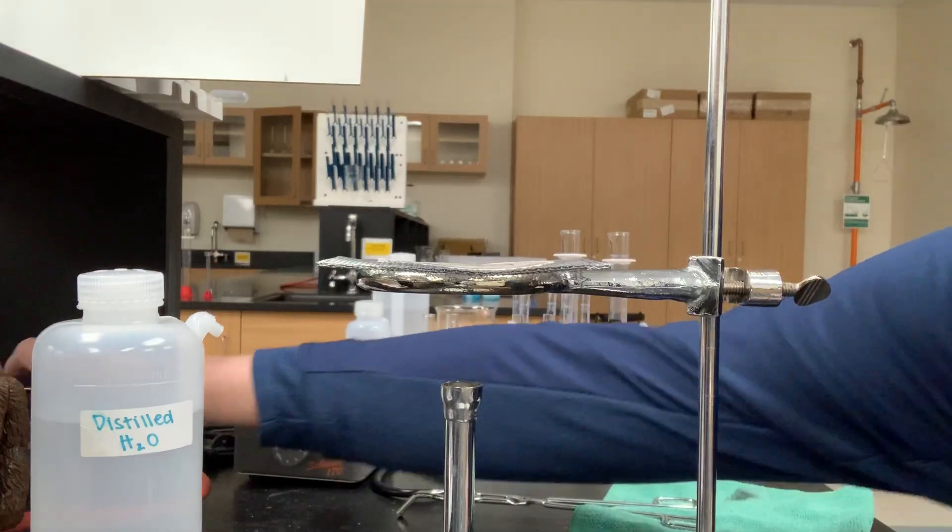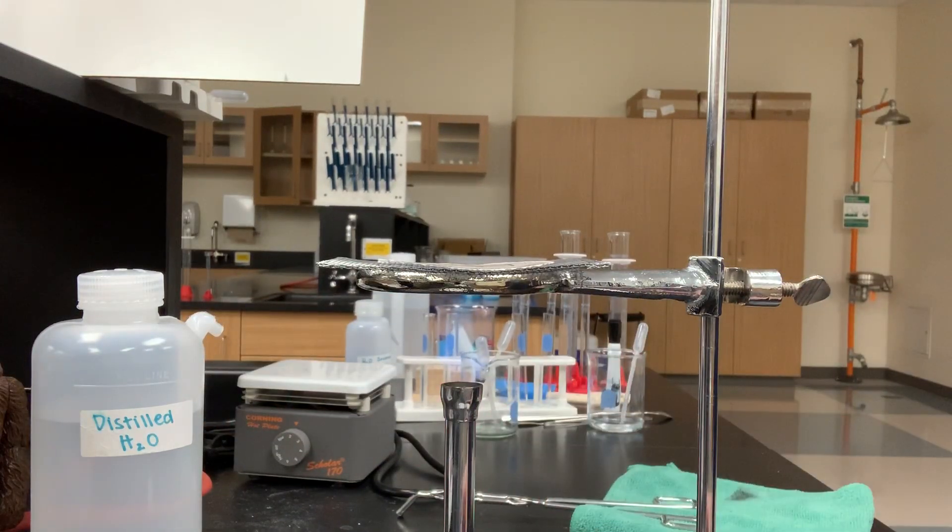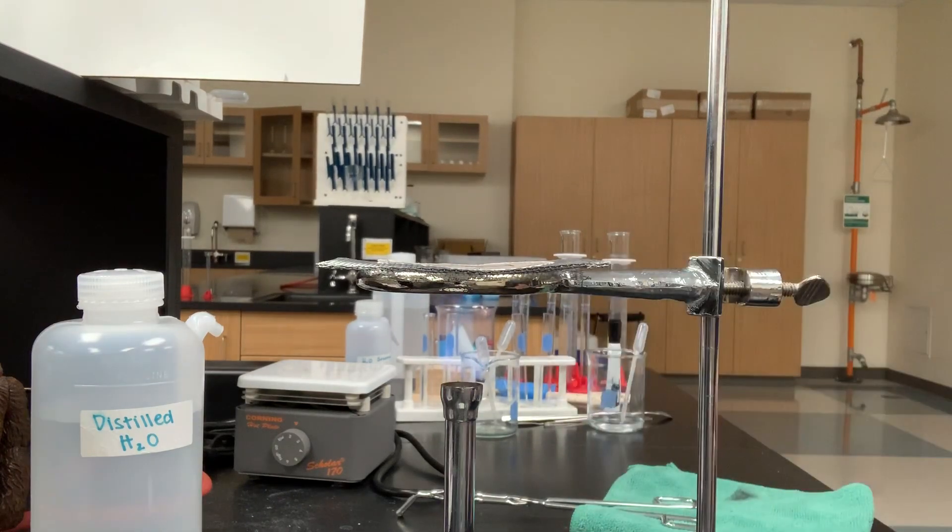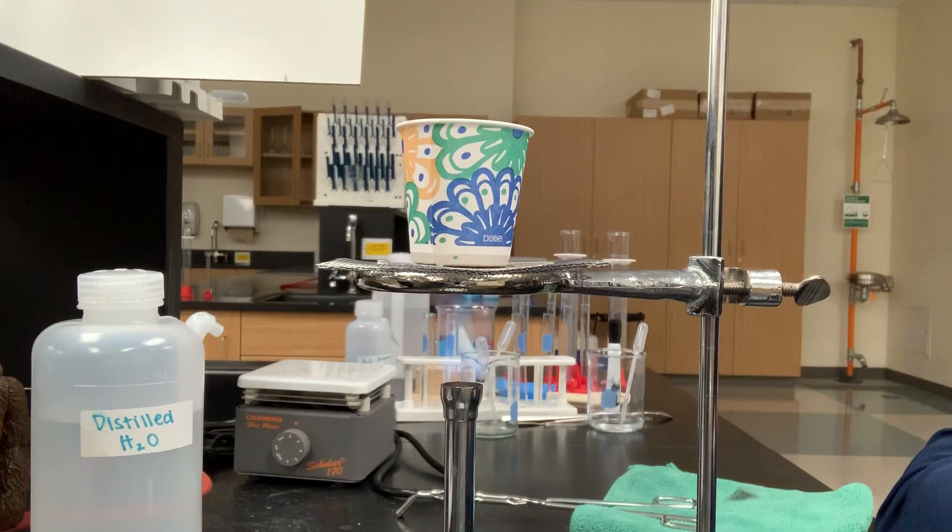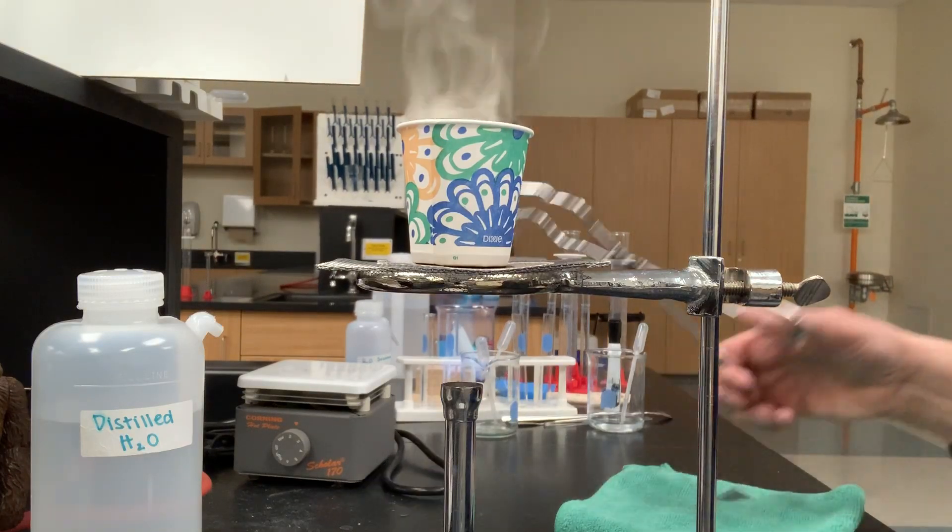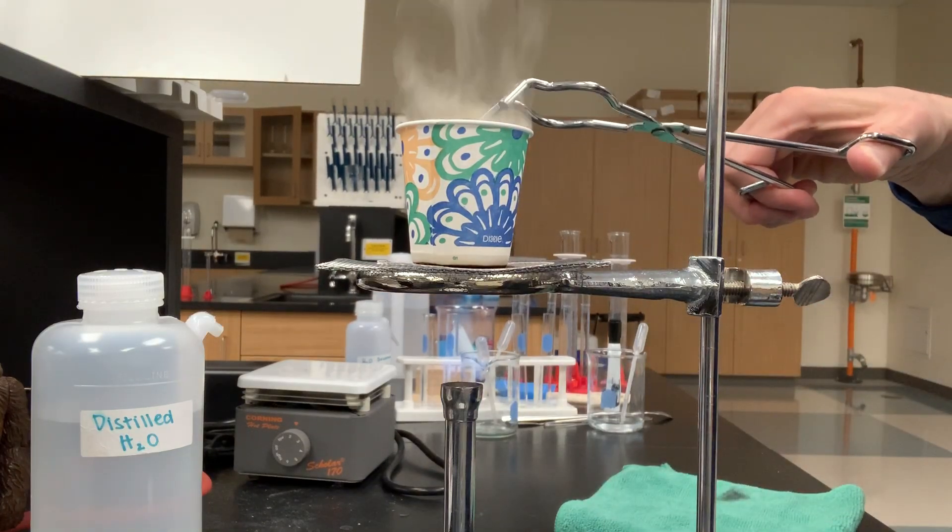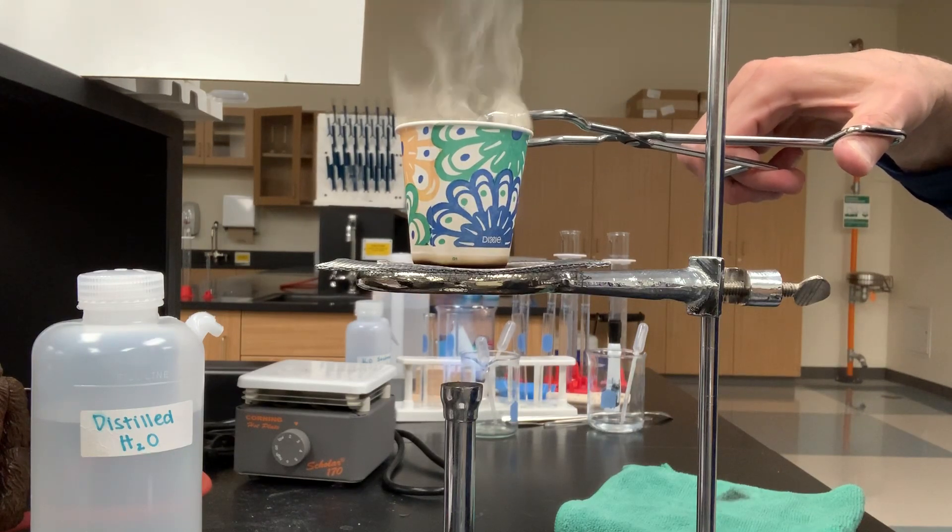I'm gonna turn my Bunsen burner on for you and I'm gonna put the paper cup that's empty on my wire gauze here and we're gonna see what happens as I heat that paper cup. After just a few seconds, in fact I'm gonna take it off really quickly here, you can see it starts to smoke and the paper cup begins to burn.